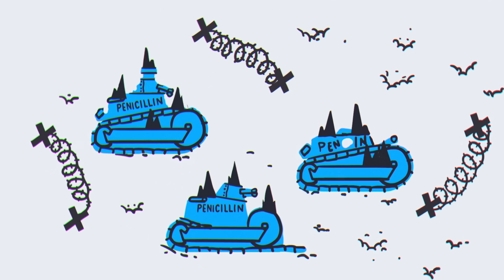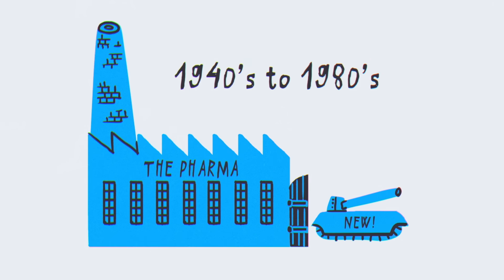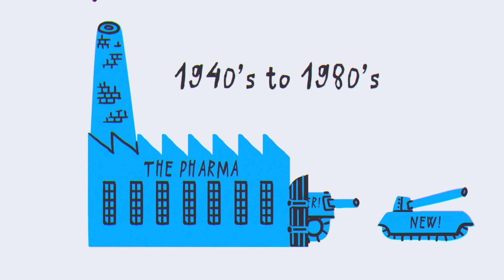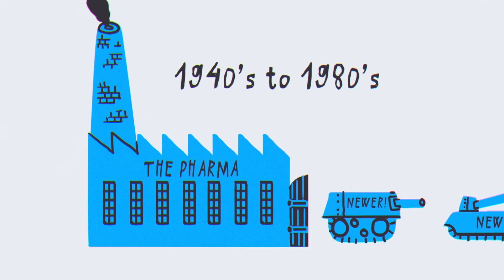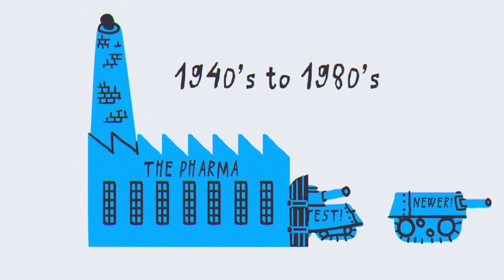He was right. In the 1940s and 50s, resistant bacteria already began to appear. From then until the 1980s, pharmaceutical companies countered the problem of resistance by discovering many new antibiotics.